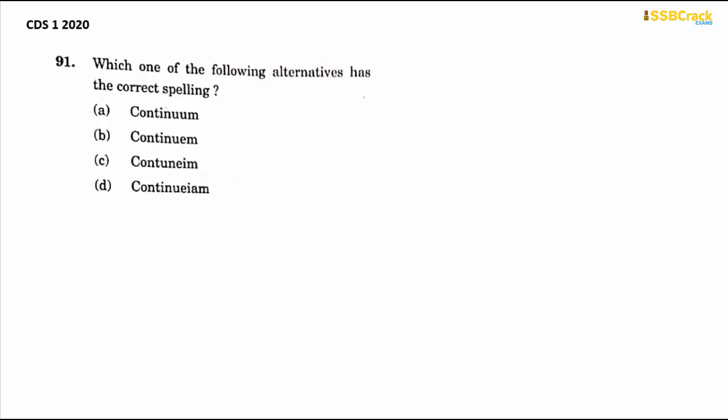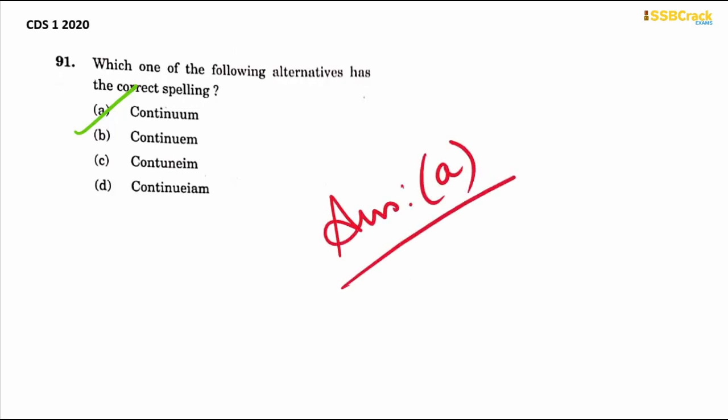The first question asks which of the following alternatives has the correct spelling. The word is 'continuum', spelled in four different ways. The right way is option A — 'continuum'. Because we pronounce it as 'continuum', the W must be there.